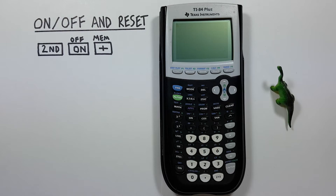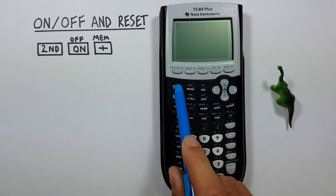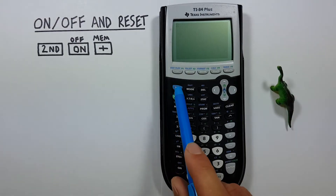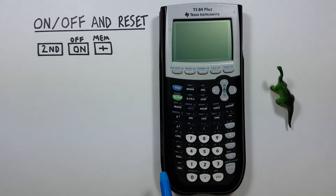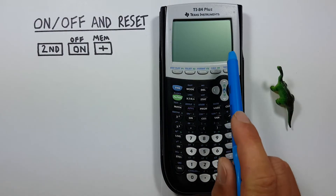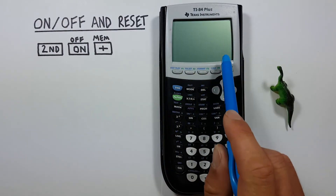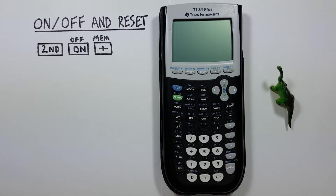When you're done with it, it's a good idea to turn this calculator off, because this calculator does take batteries, and you don't want it to run out of batteries on you in the middle of a test. To do that, we use the second function key and then the on key again, but since we're using the second function, it's off. There we go — the screen will turn off and we're saving those batteries.